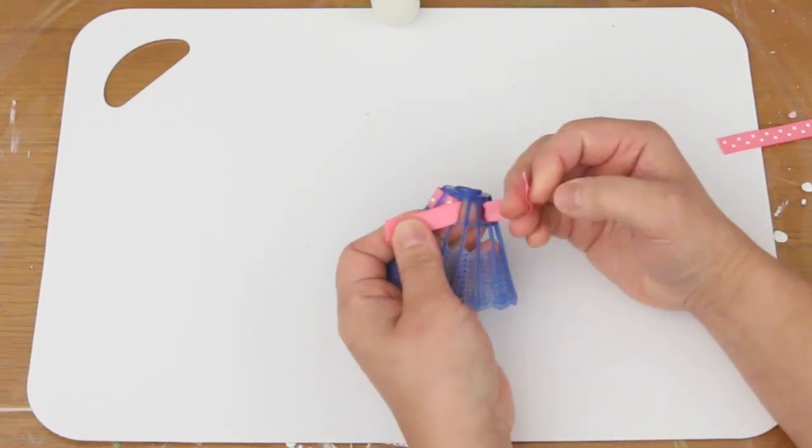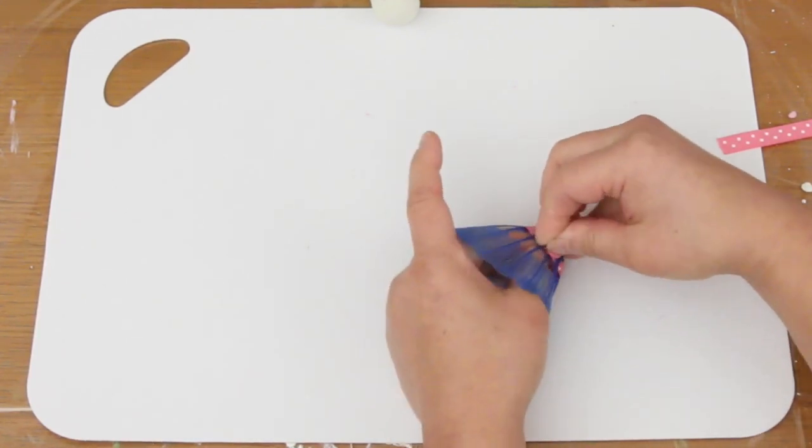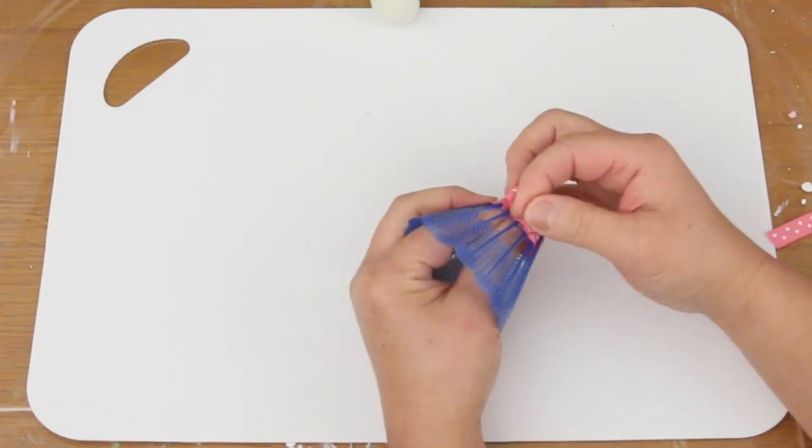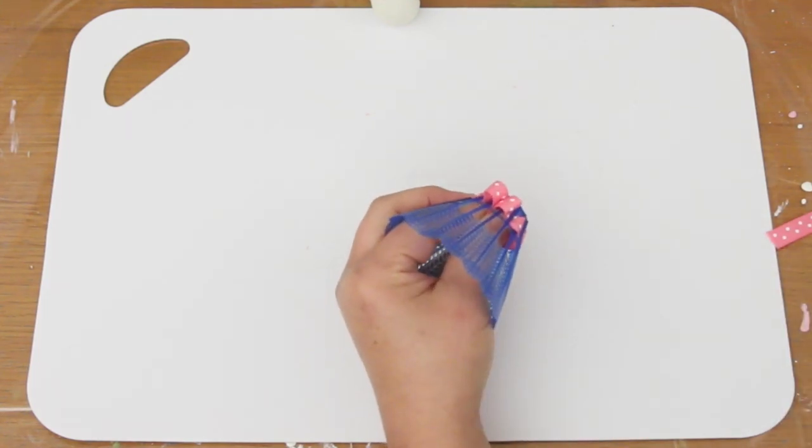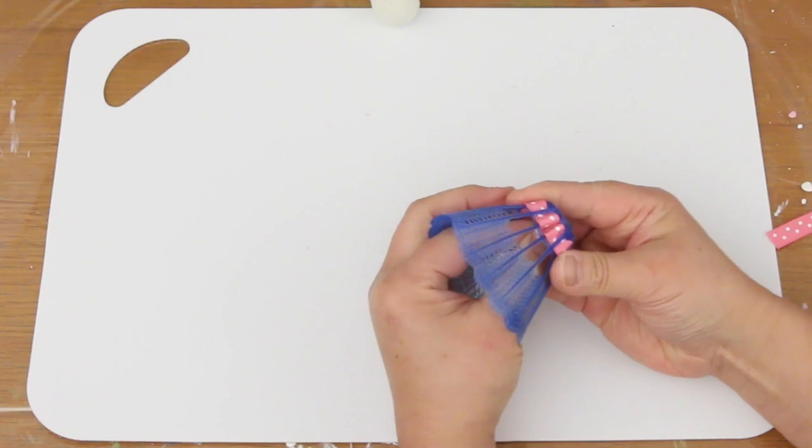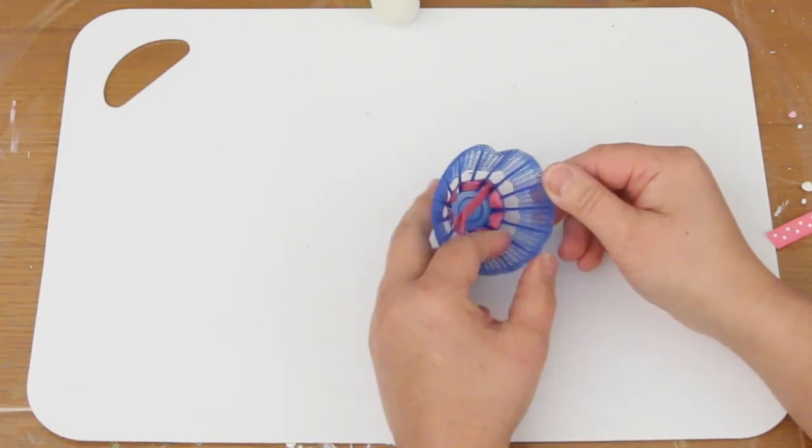Put both ends into the same opening. Push the ends up a little bit like this. Put some glue between the ends and that will hold the ribbon in place. Now you can cut off the extra inside.